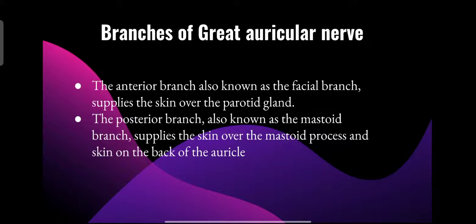Branches of the great auricular nerve: the anterior branch, also known as the facial branch, supplies the skin over the parotid gland. The posterior branch, also known as the mastoid branch, supplies the skin over the mastoid process and also the skin on the back of the auricle.